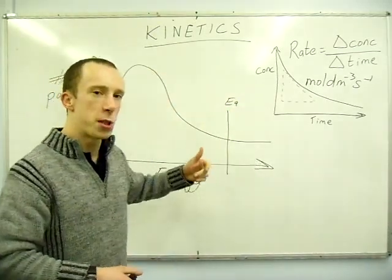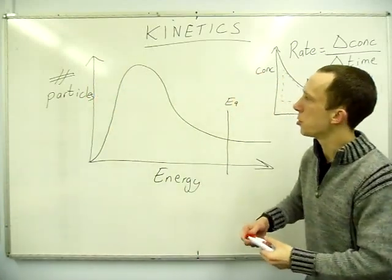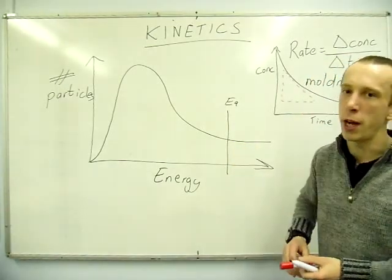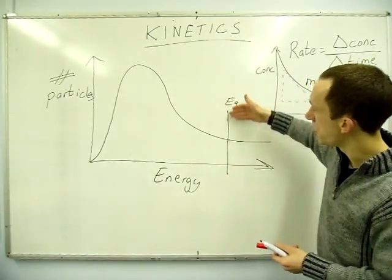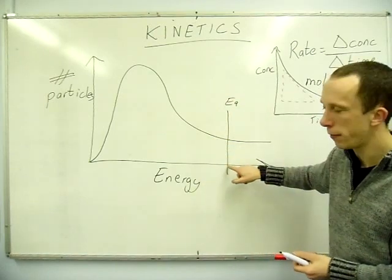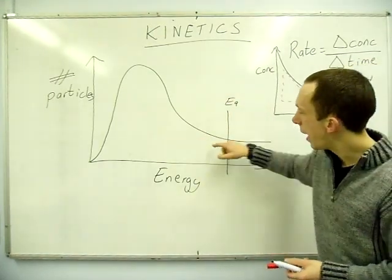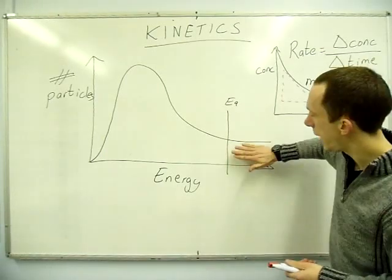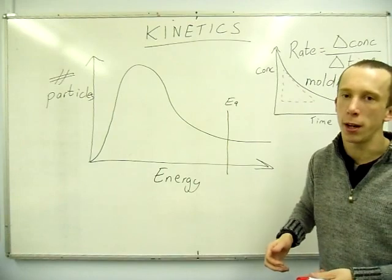So two marks: minimum and to start the reaction. So the Maxwell Boltzmann distribution shows us a couple of things. Shows us the most probable energy and also how much will actually react. So the activation energy, this is the energy it needs to start a reaction. So this value here.